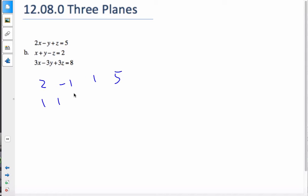1, 1, negative 1 and 2, and 3 minus 3, 3 and 8. Here is my matrix.